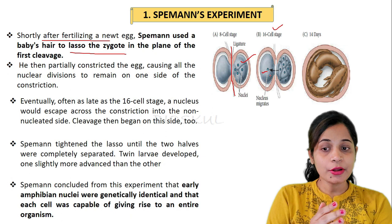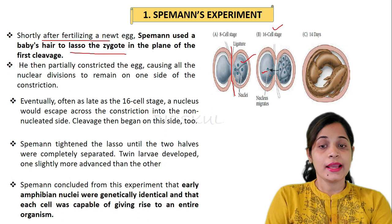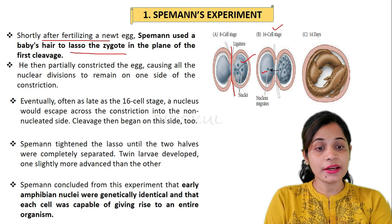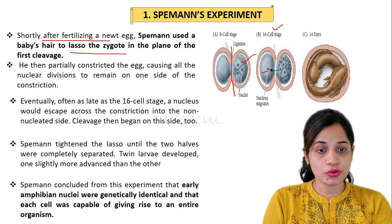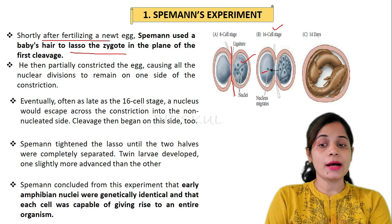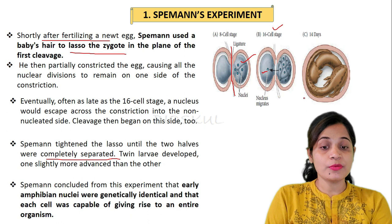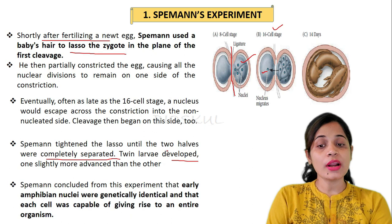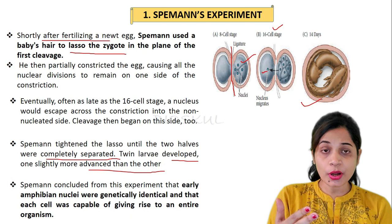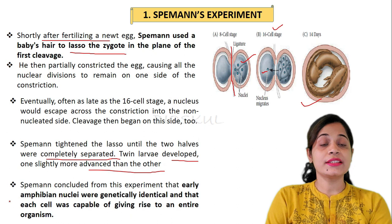Eventually, at the 16-cell stage, a nucleus escaped from the nucleated side to the non-nucleated side and cleavage began on the other side too. Spemann then tightened the lasso until the two halves were completely separated. He observed that twin larvae developed, with one larva more advanced than the other at 14 days. He concluded that amphibian nuclei are genetically identical and each cell can give rise to an entire organism.